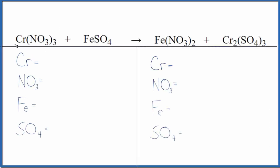Let's balance the equation for Cr(NO3)3 plus FeSO4, chromium 3 nitrate plus iron 2 sulfate. We'll also look at the type of reaction and states.